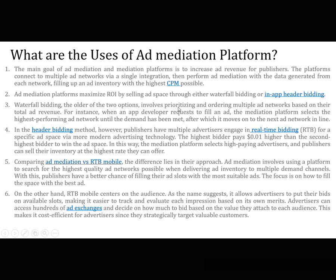In waterfall bidding, multiple ad networks are prioritized and ordered based on their total ad revenue. When an app developer requests to fill an ad, the mediation platform selects the highest-performing ad network until demand is met, then moves on to the next in line. In the header bidding method, publishers have multiple advertisers engage in real-time bidding for a specific ad space. The highest bidder pays $0.01 higher than the second-highest bidder to win that space.